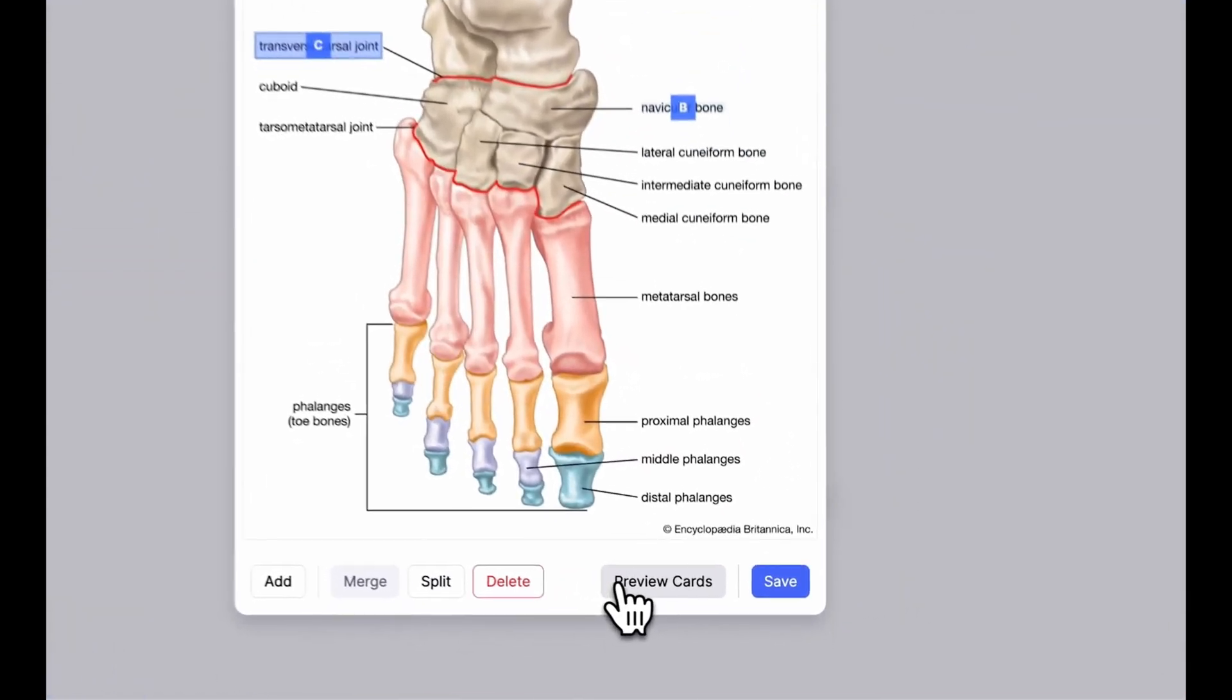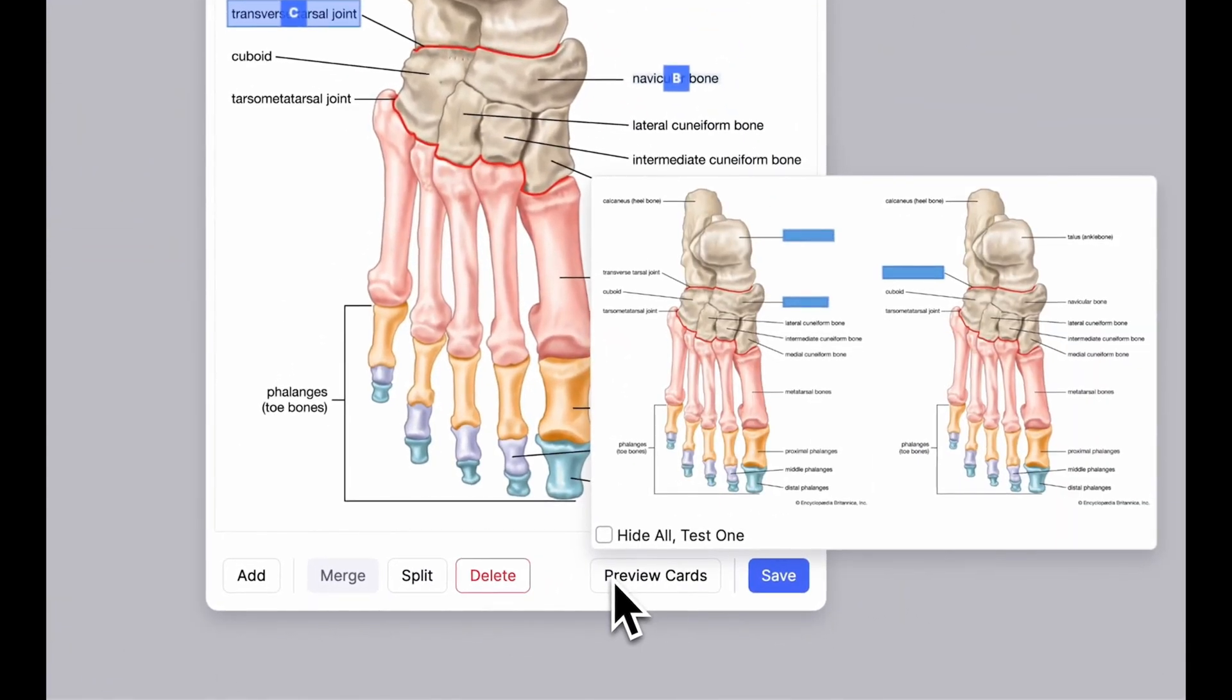To preview the cards, click Preview Cards at the bottom. This will show you each card as they're going to appear when you test yourself.